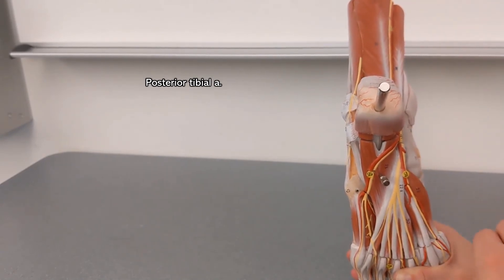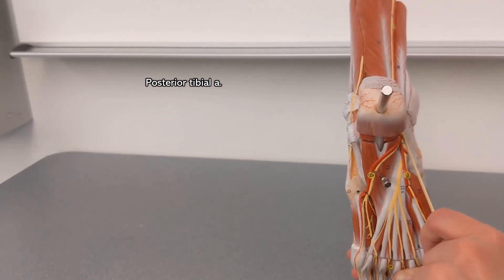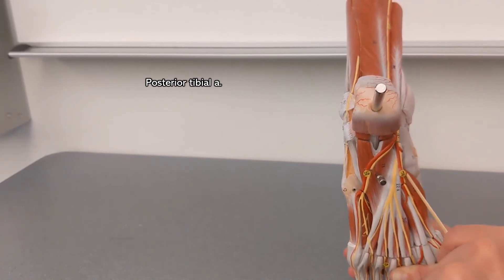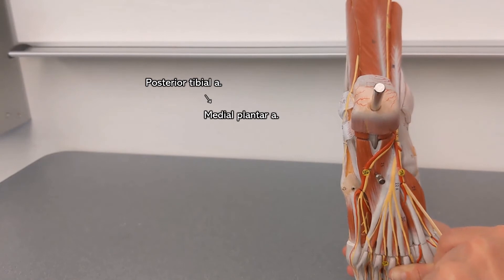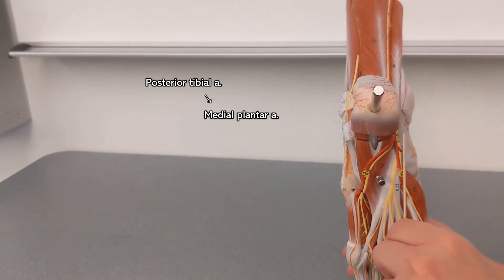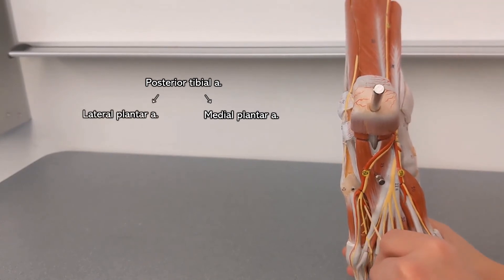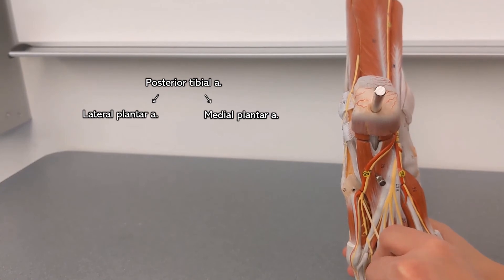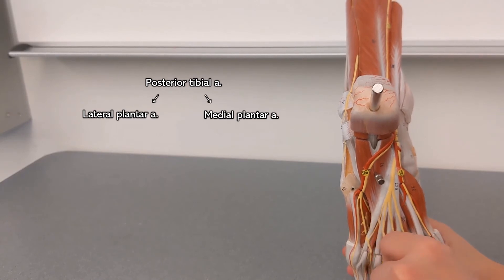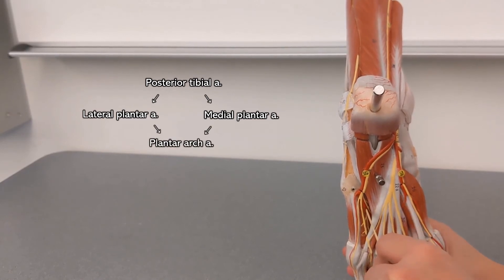So where my hand is, that's the big toe side. This is the medial plantar artery and this is the lateral plantar artery. Now we cannot see it, but those two arteries meet up again and they form the plantar arch.